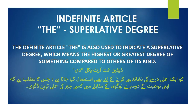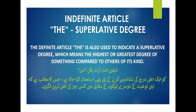The definite article 'the' is also used to indicate a superlative degree, which means the highest or the greatest degree of something compared to others of its kind. Indefinite article the کو اعلیٰ ترین درجے کی نشاندہی کرنے کے لیے استعمال کیا جاتا ہے، جس کا مطلب یہ ہے کہ وہ اپنی نوعیت کی دوسری چیزوں کے مقابلے میں اعلیٰ درجے کی ہو۔